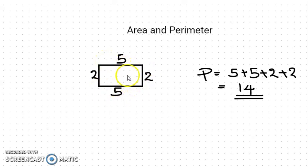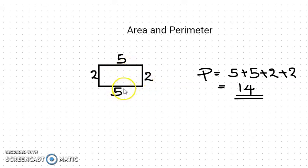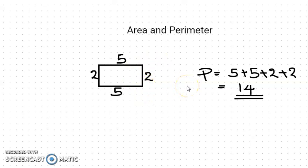If it is a rectangle, then 4 sides are there. If it is a triangle, only 3 sides — we add the 3 sides to find the perimeter. The same way, for a pentagon, hexagon, or any polygon, we can find the perimeter by adding the sides.